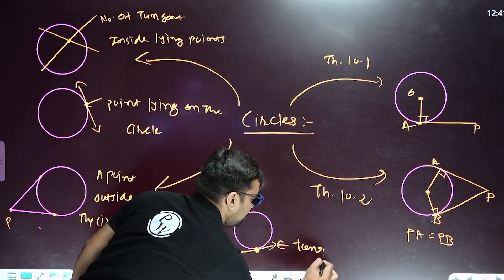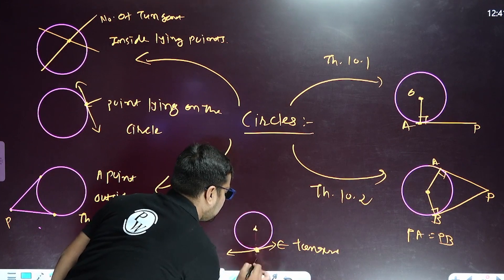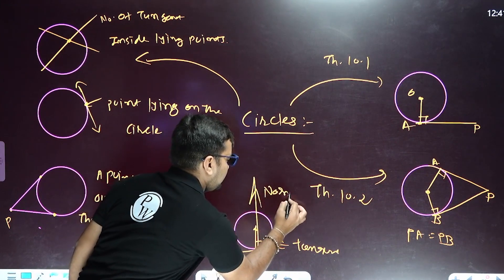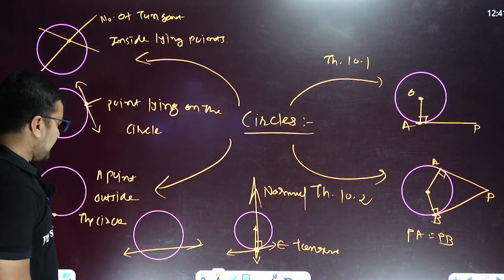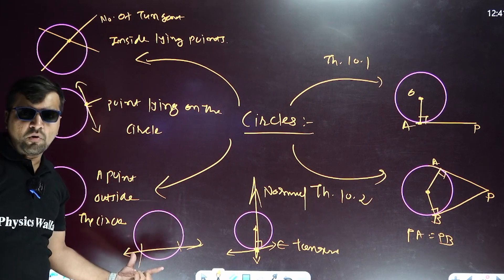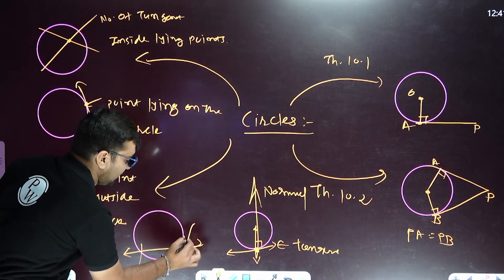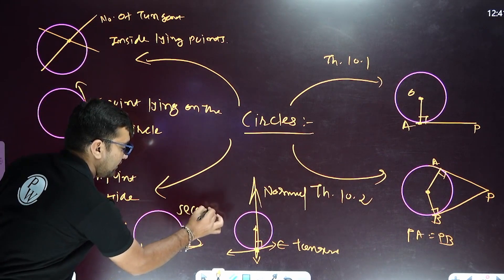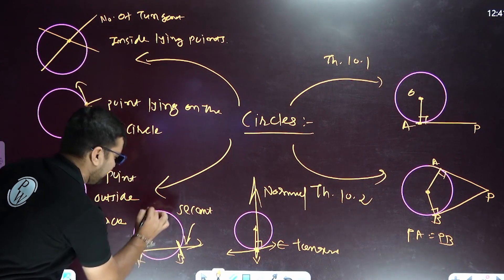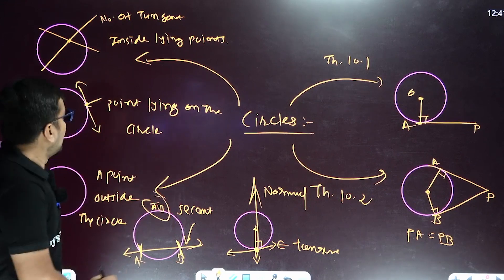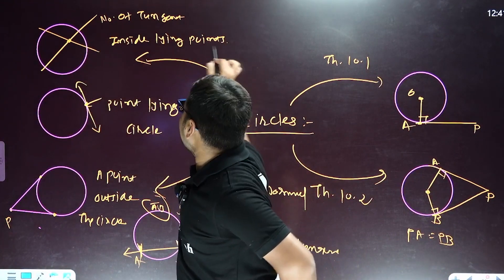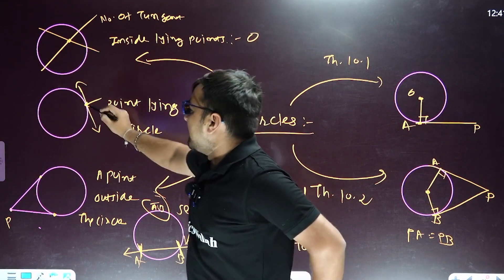If any line touches a circle at only a single point, that line is known as a tangent. A line perpendicular to the tangent is also known as a normal. A line intersecting the circle at two points is known as a secant. A chord is a line segment only.